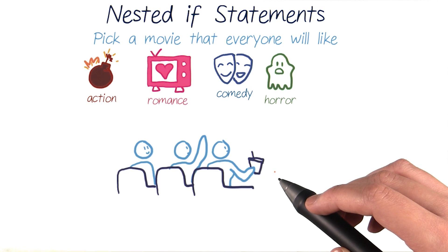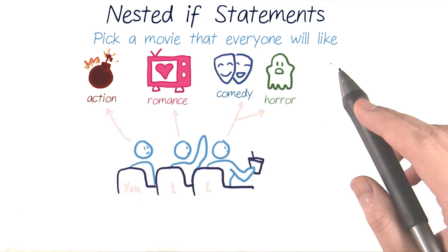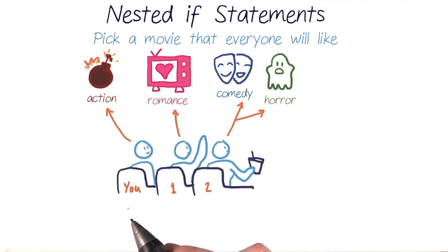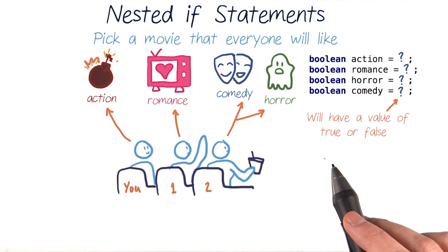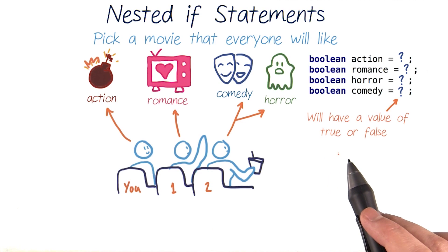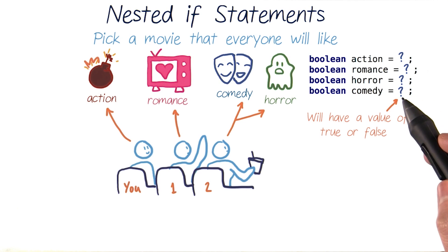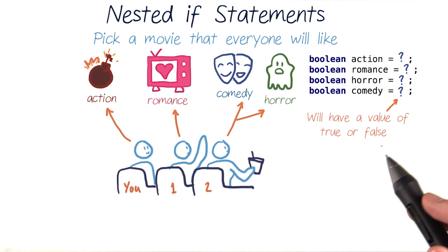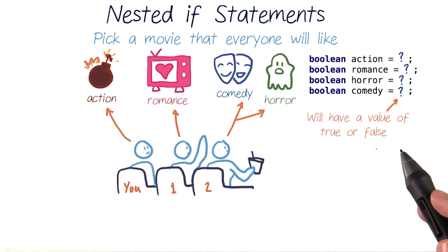Say you have a couple friends coming over to see a movie, and you're trying to write a program that will pick a movie that everyone will like. You only like action movies, but friend one only watches movies that have romance in them, and friend two only watches movies that have either comedy or horror. Given these four Boolean variables that store whether a movie includes action, romance, horror, or comedy — all true if it does and false if it doesn't — what if statement can we write to choose a movie that everyone can enjoy?